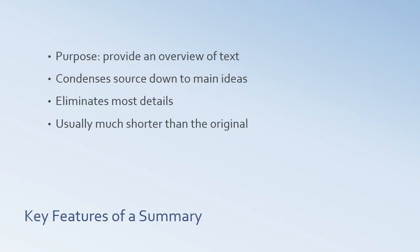What are the key features of a summary? Its purpose is to provide an overview of the text — a bird's eye view, a glimpse of the whole at one shot, rather than all the details. It condenses the source down to its most crucial ideas. A summary eliminates most of the details because there's just not room for them if we're trying to get an overview. And a summary is going to be usually much shorter than the original.